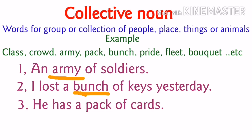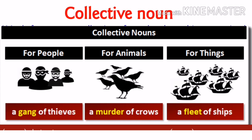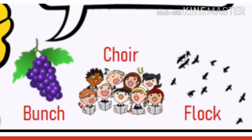Next sentence: He has a pack of cards. In the sentence we can see there is a collection of cards, so we term it as pack of cards. Pack is the collective noun used here. Next sentence: There is a pride of lions in the forest — pride means a group of lions, so pride is the collective noun. See this picture: the first picture shows a group of thieves, so it is called a gang of thieves. Next, a murder of crows is the group of crows. A fleet of ships is the group of ships. We can also see a bunch of grapes, a choir of children and a flock of birds. These are examples of collective noun.